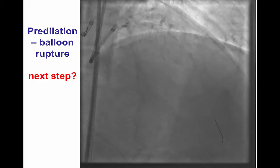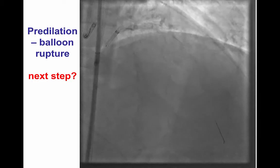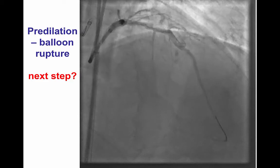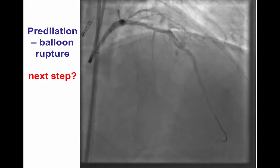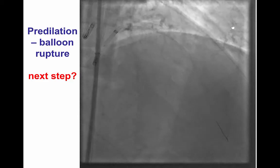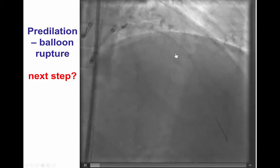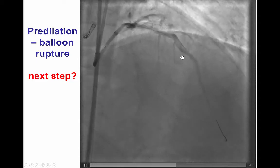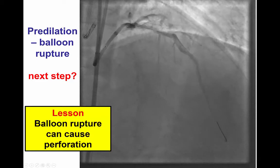However, during the predilatation attempts, the balloon ruptured. And when we took a picture, this is what was found — a significant large vessel perforation at the site of the balloon rupture.